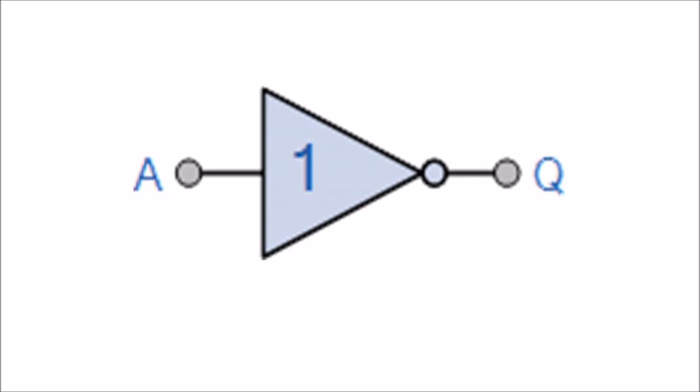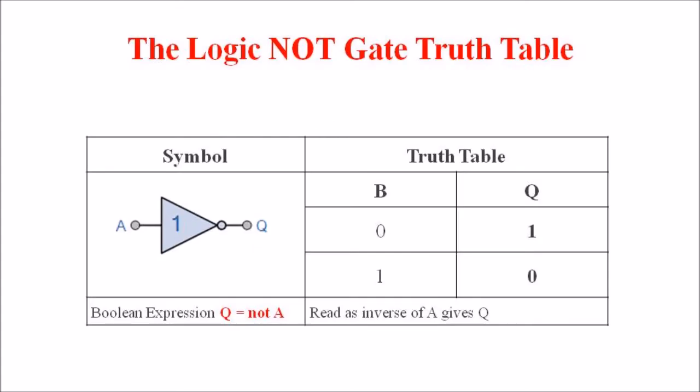This bubble denotes a single inversion or complementation of the signal and can be presented on either or both the output and input terminals. The truth table of NOT gate is as follows where the Boolean expression is represented as Q = NOT A, which reads as inverse of A gives Q. If A = 0 then Q = 1, and if A = 1 then Q = 0.